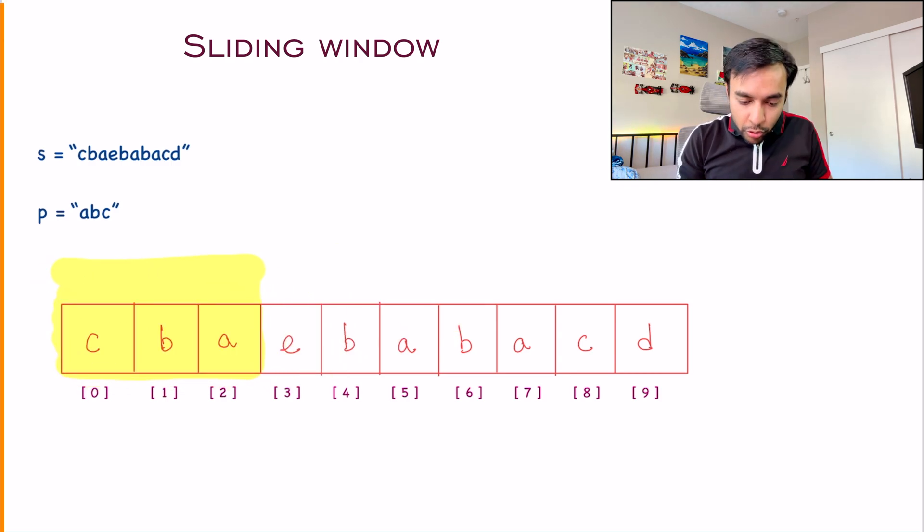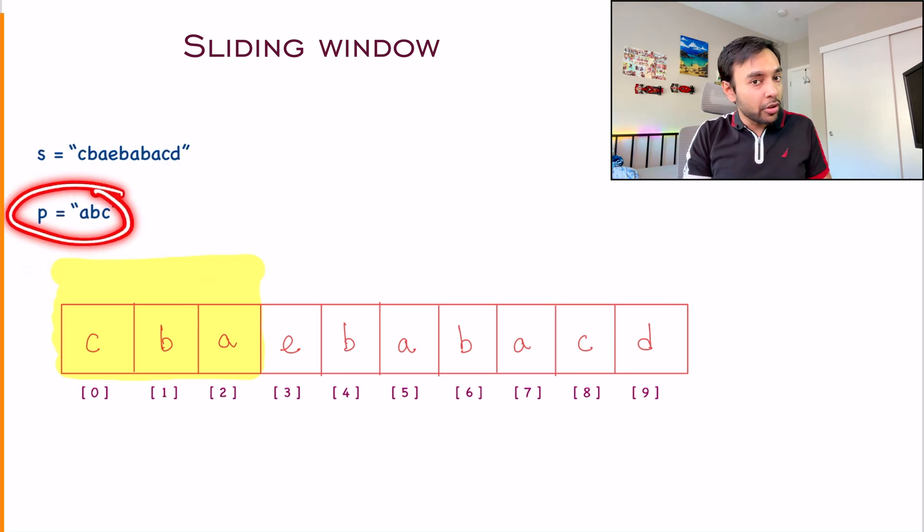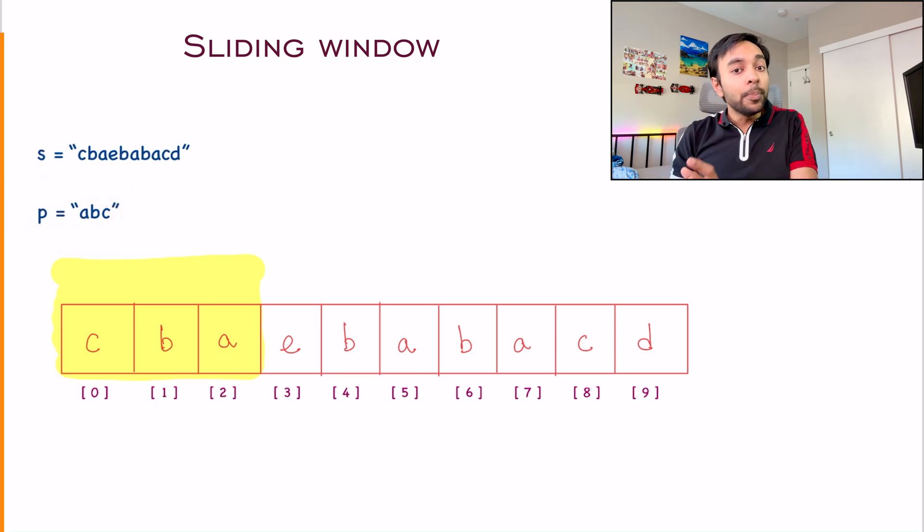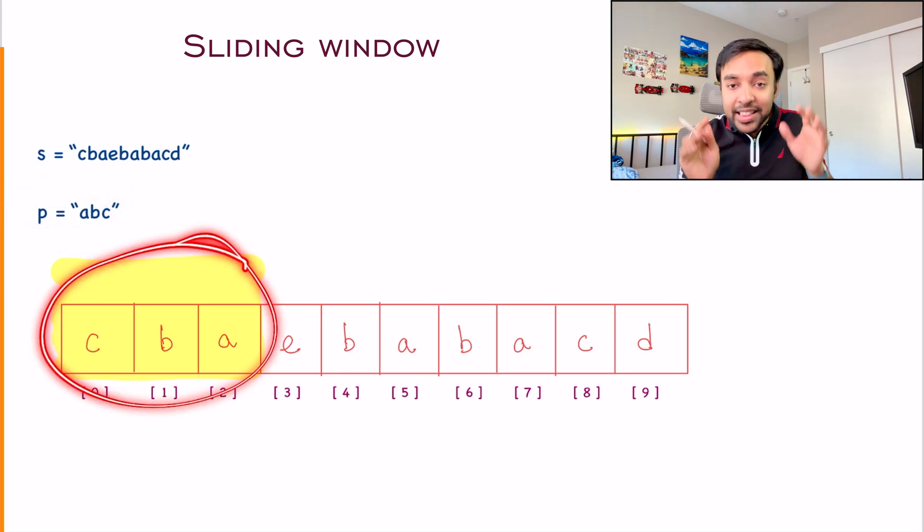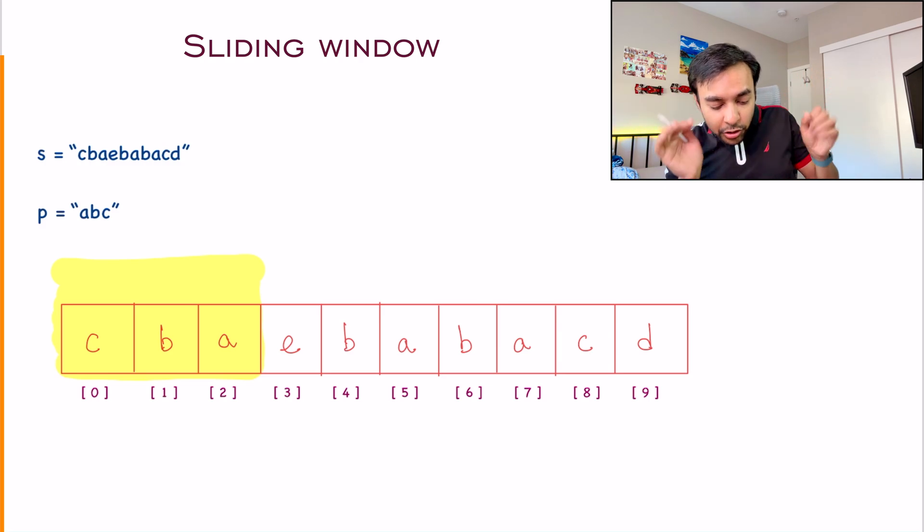What I can do is I can map this original string in form of an array. And now I can bring a window over here. So what is this window showing you? This window is of the length three. Why? Because P is also of the length three. My anagram cannot be shorter than this. It cannot be longer than this. So if my anagram has to exist, it has to be in this window size.